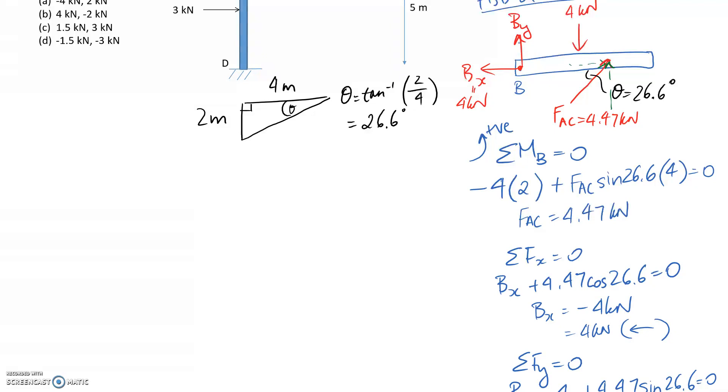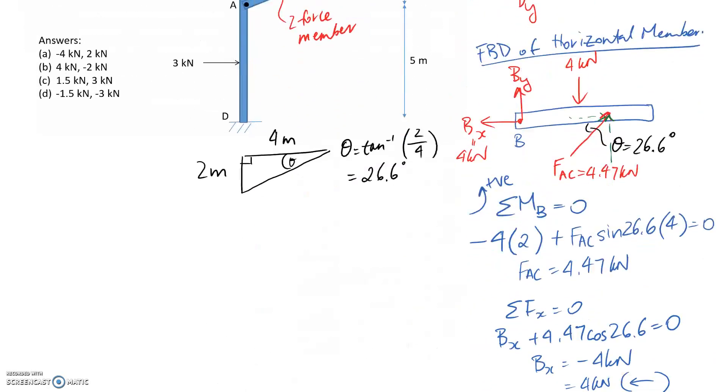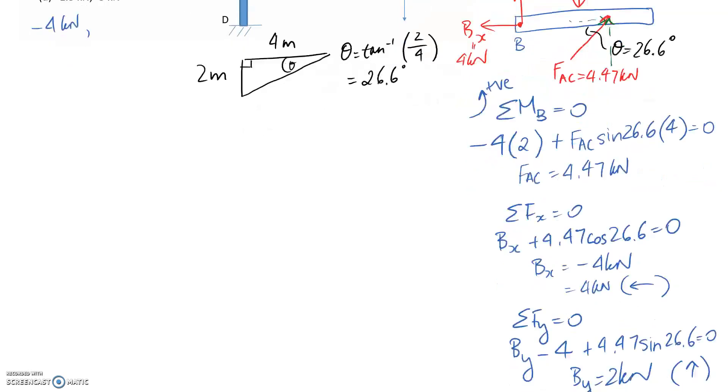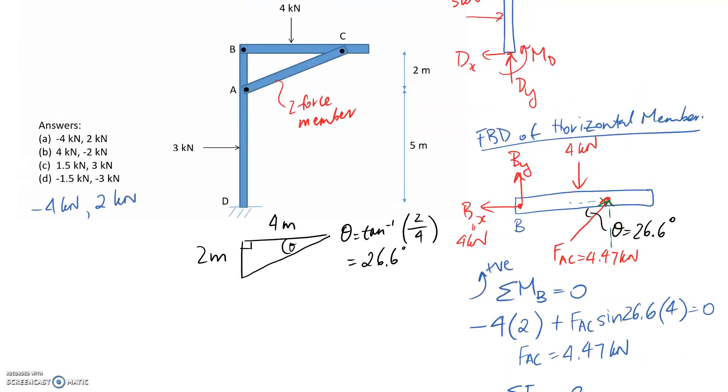Now we can answer the question. We don't need to solve for the other reactions because we weren't asked for them. Remembering that the sign convention for the x and y direction applies, our reaction was back to the left for the x direction, so that's negative 4. This was up, so it's positive 2. If we look through the options, the first one matches that description, so that's the answer.